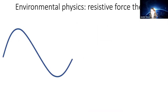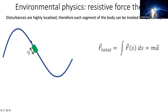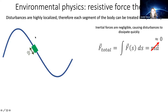We use resistive force theory to model these frictional interactions. Originally developed for movement in highly viscous fluids, in these situations disturbances are highly localized so each segment of the body can be treated independently. The net force on the body at any moment is approximately zero because inertial forces are negligible compared to viscous forces.